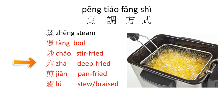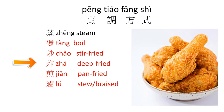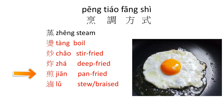炸 means deep-fry. So for example, 炸雞 — we said 雞 is chicken, so 炸雞 is fried chicken. You just look for 炸 and then 雞. 煎 means pan-fry.